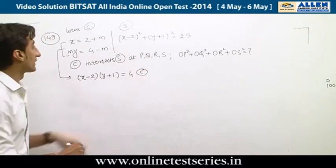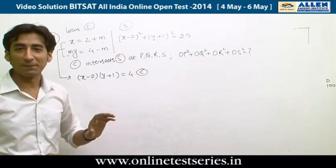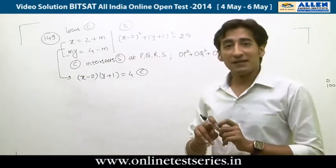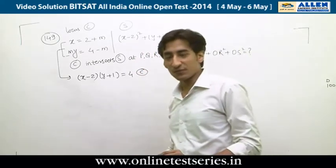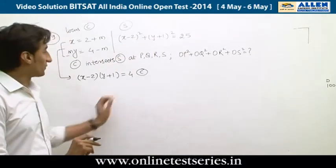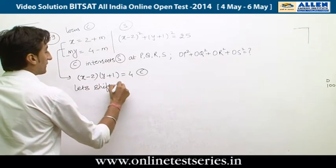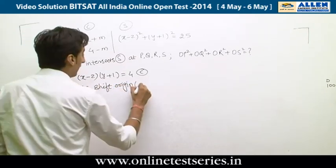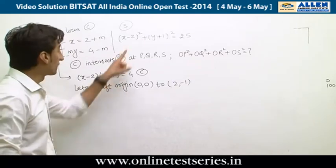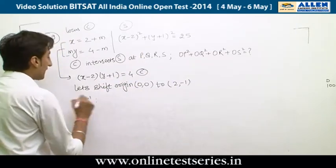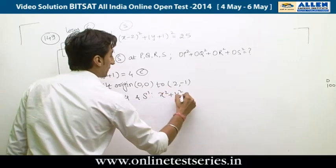The curve C is (x-2)(y+1) = 4 and the circle S is (x-2)² + (y+1)² = 25. The center of the circle is (2, -1), which is also the center of the hyperbola. Shifting the origin to (2, -1) simplifies both equations: C becomes XY = 4 and S becomes X² + Y² = 25.